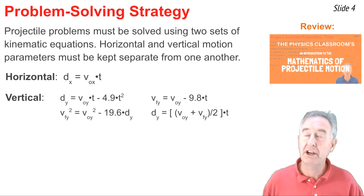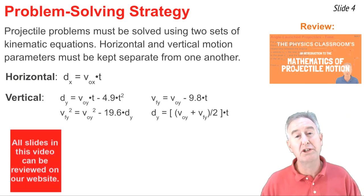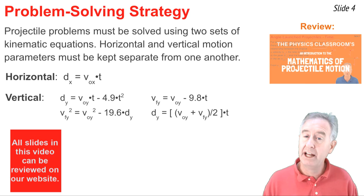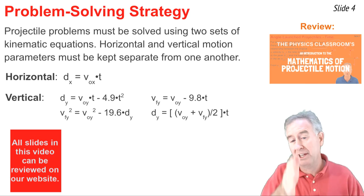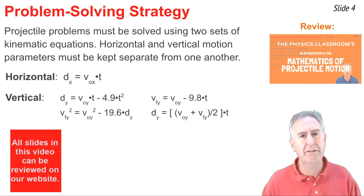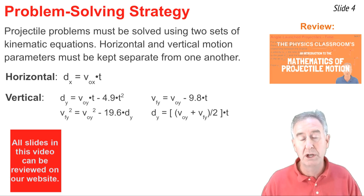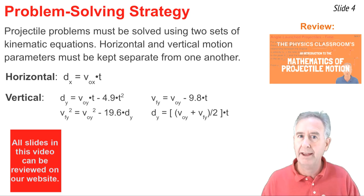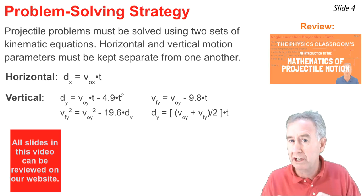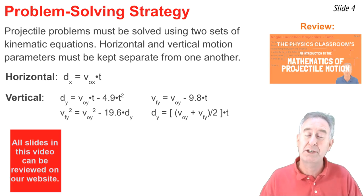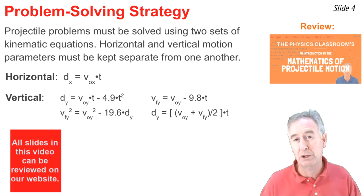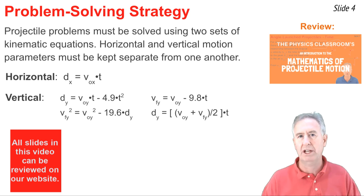In a previous video, we discussed the use of kinematic equations in the analysis of projectile problems. We learned that because the horizontal and the vertical motion are independent of each other, we must use two sets of kinematic equations. One for the horizontal and one for the vertical. And we must take known values of variables and make sure the horizontal values go in the horizontal equations and the vertical values in the vertical equations. No mixing and matching.